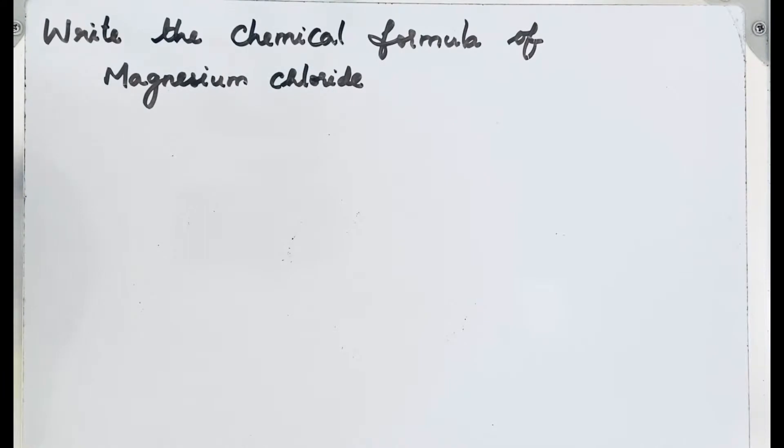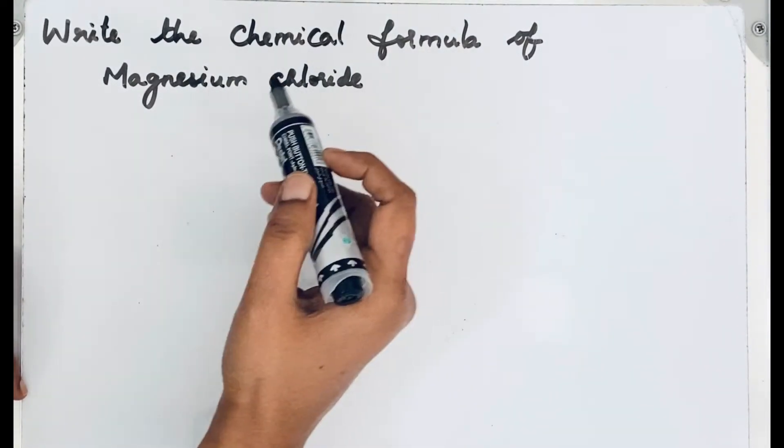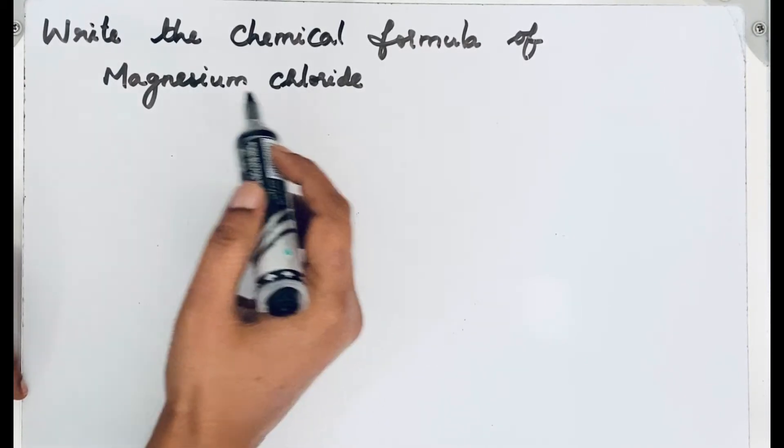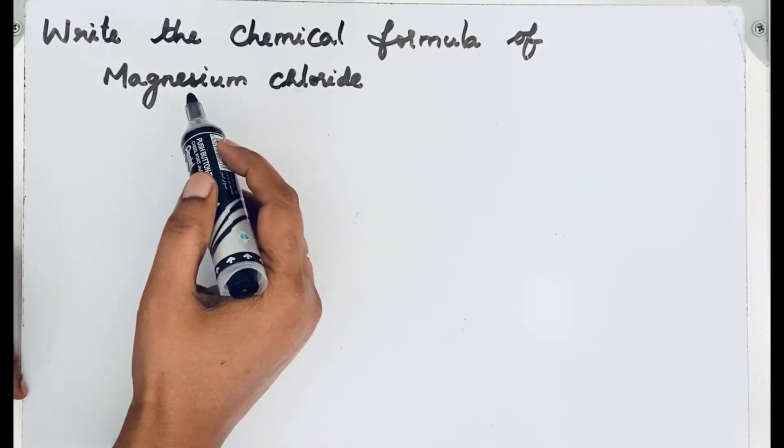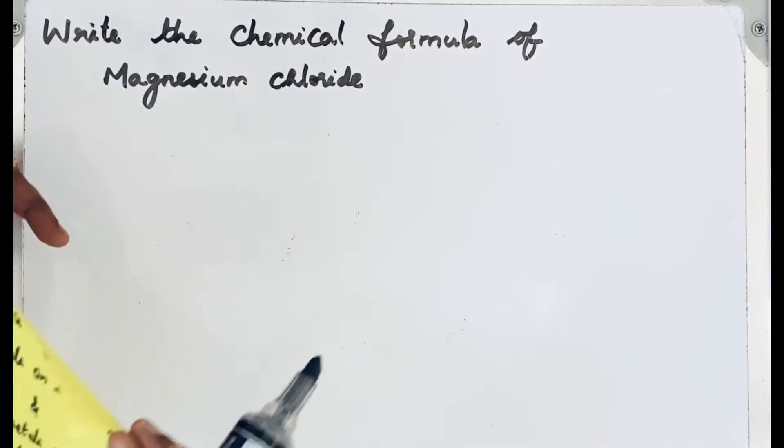Welcome to Aurora Chemistry for Everyone. In this video, let's see how to write the chemical formula of magnesium chloride. Magnesium chloride is a binary compound which contains only two elements: magnesium and chlorine. There are three steps for writing the chemical formula.